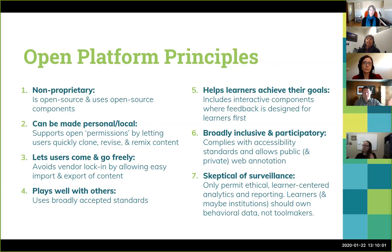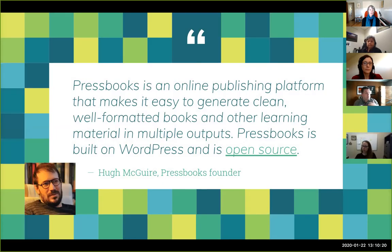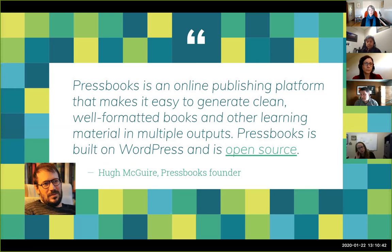Here's a list of core platform principles that matter to us at Pressbooks. The first principle is that we want the platform to be non-proprietary — it should be open source and use open source components. Pressbooks, as our founder Hugh wrote very succinctly, is an online publishing platform that makes it easy to generate clean, well-formatted books and other learning materials in lots of outputs. It's built on WordPress and is open source, meaning you can download it for free, install it on your own server, edit, modify, remix, revise, and fork the software.